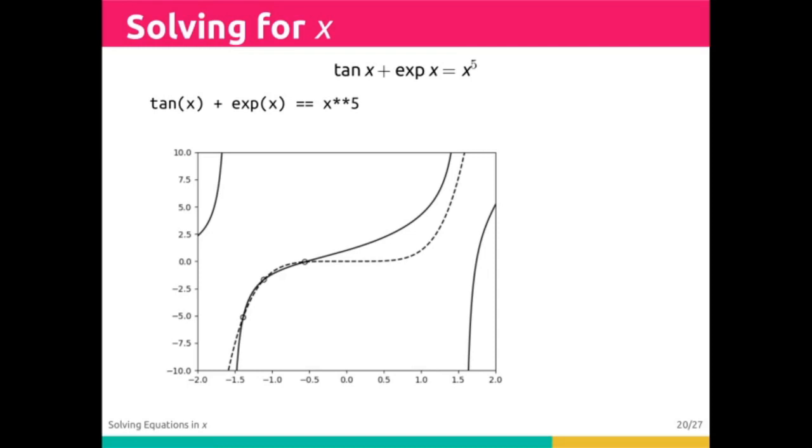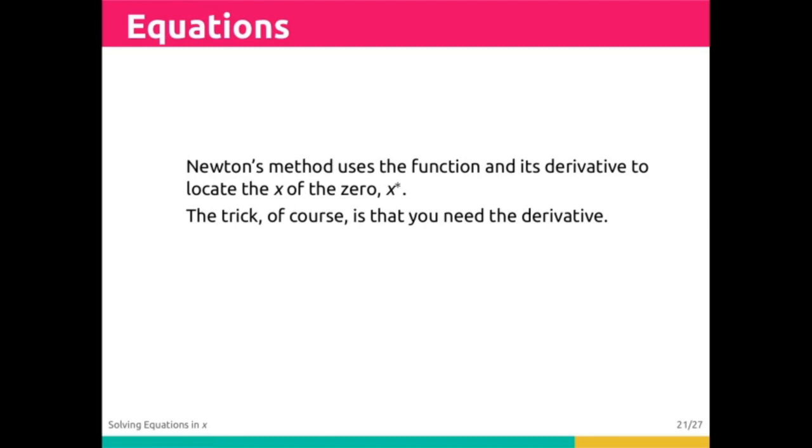We can also use a method for finding zeros of the equation by varying the independent variable x. This is equivalent to rearranging from left-hand side equals right-hand side to left-hand side minus right-hand side equals zero, and then solving for x, similar to how we saw with Sympy. One popular and effective technique is to use Newton's method to locate a zero, using only the function and its first derivative.